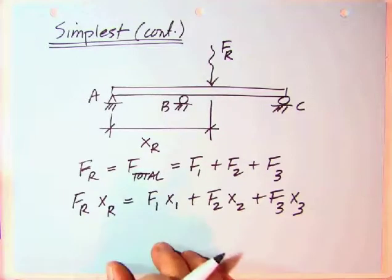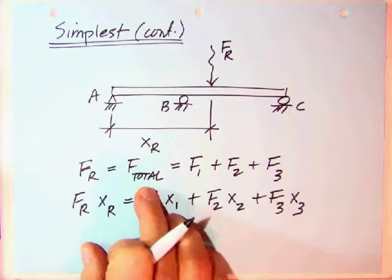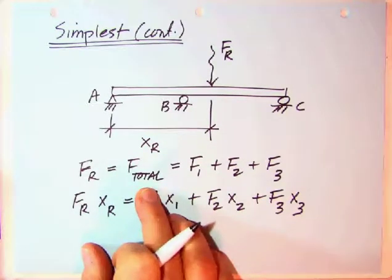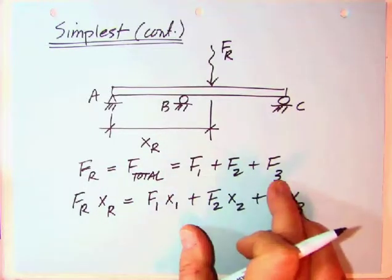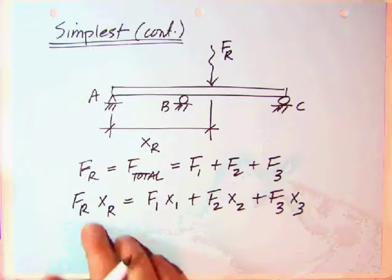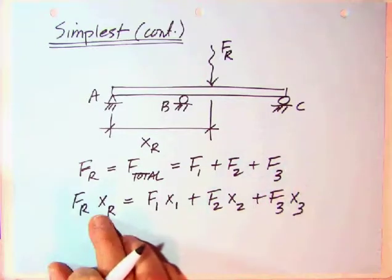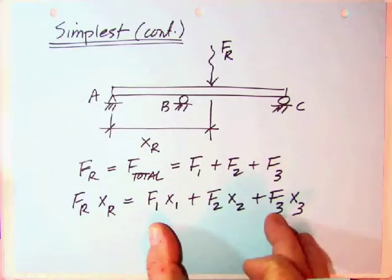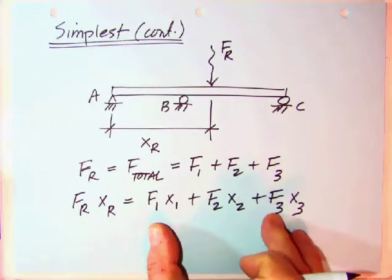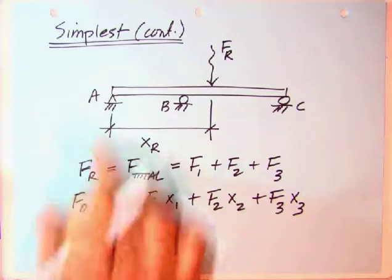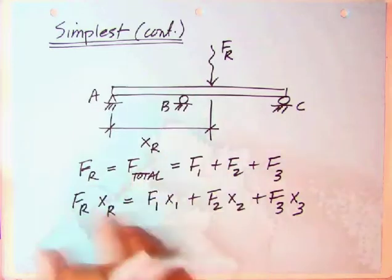Okay, the F sub R is nothing more than F sub total, which we found in the distributed loads video, F1 plus F2 plus F3. I think that adds up to 3,900. We're going to do this on another page here.